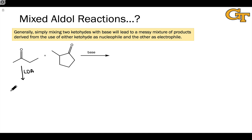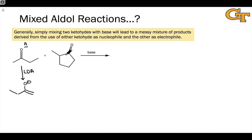One approach we might take is to hit just methyl ethyl ketone with a strong base like LDA. This would generate the less substituted enolate. But let's say we could generate this enolate in 100% yield by using this very strong kinetic base in the presence of methyl ethyl ketone without introducing the other compound yet at all. Could we then take compound B and hit this enolate with that compound and expect pure product from the use of methyl ethyl ketone as the nucleophile and compound B as the electrophile?